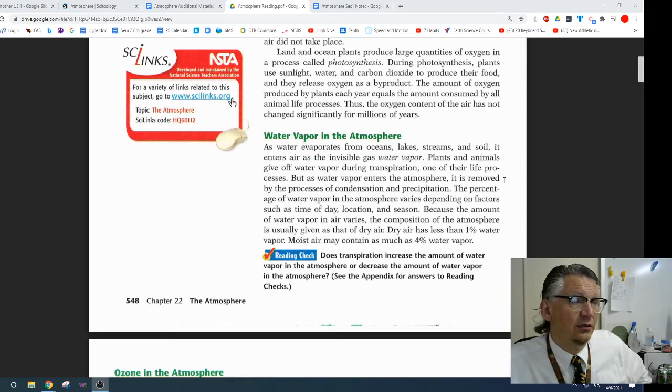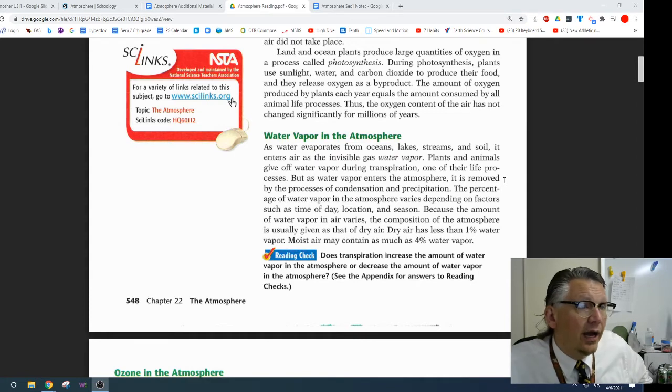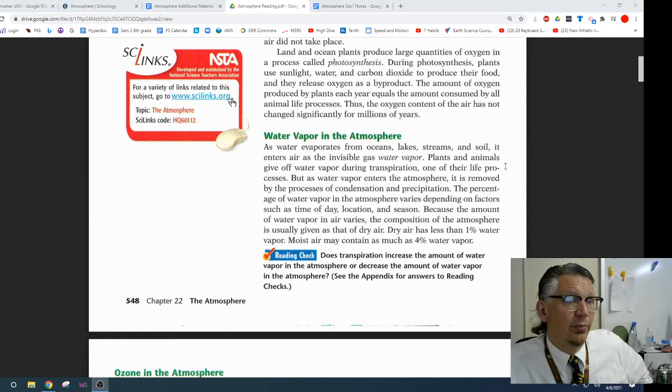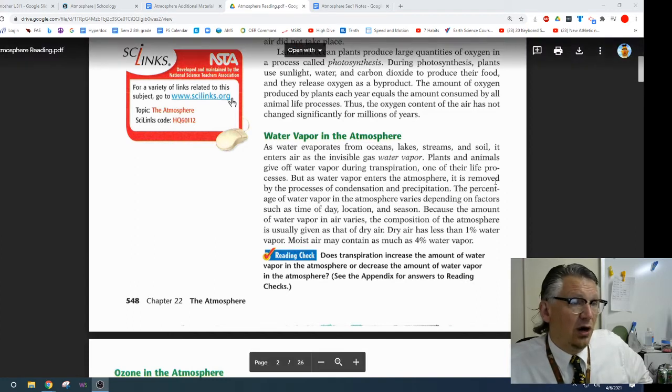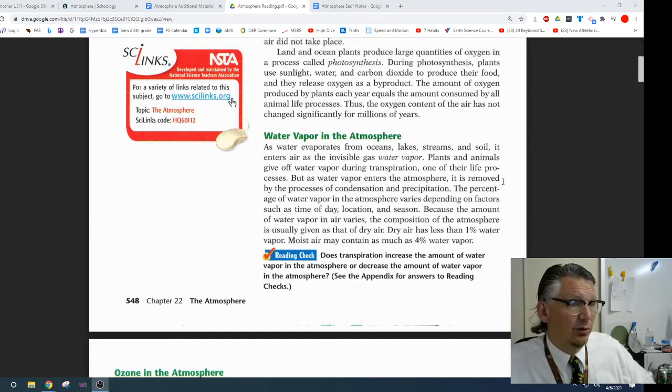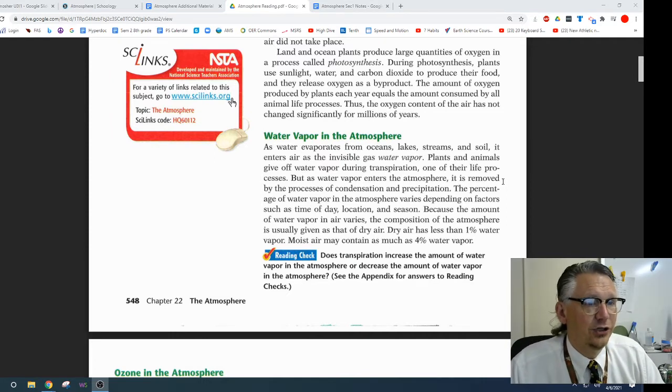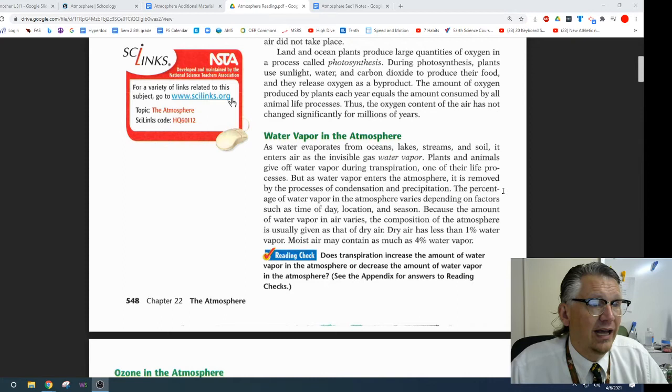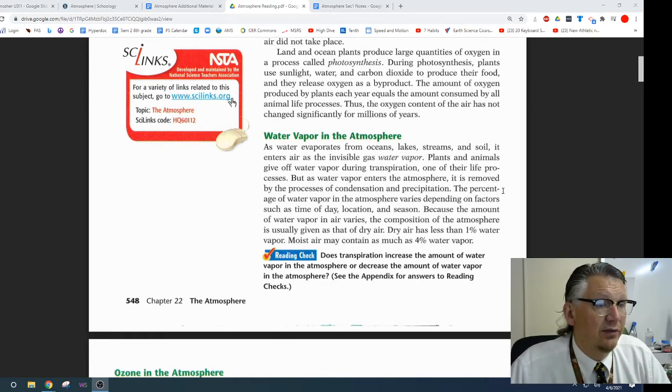Water vapor in the atmosphere. As water evaporates from oceans, lakes, streams, and soils, it enters the air as invisible gas water vapor. Plants and animals give off water vapor during transpiration, one of their life processes. But as water vapor enters the atmosphere, it is removed by a process of condensation and precipitation. The percentage of water vapor in the atmosphere varies depending on factors such as time of day, location, and season. Because the amount of water vapor in the air varies, the composition of the atmosphere is usually given as that of dry air. Dry air has less than 1% water vapor. Moist air contains as much as 4% water vapor.